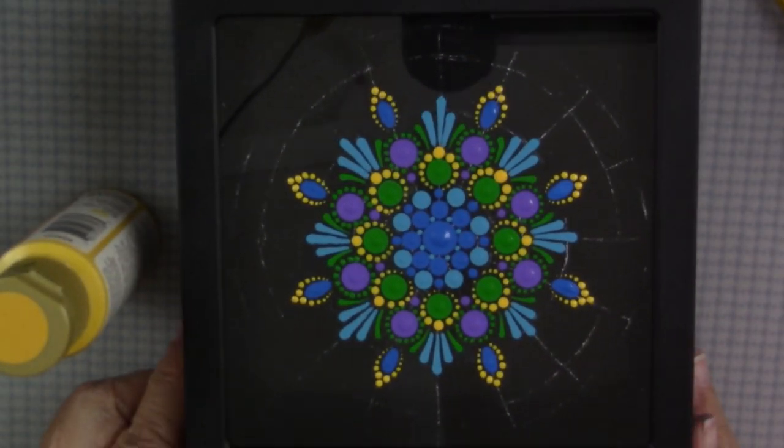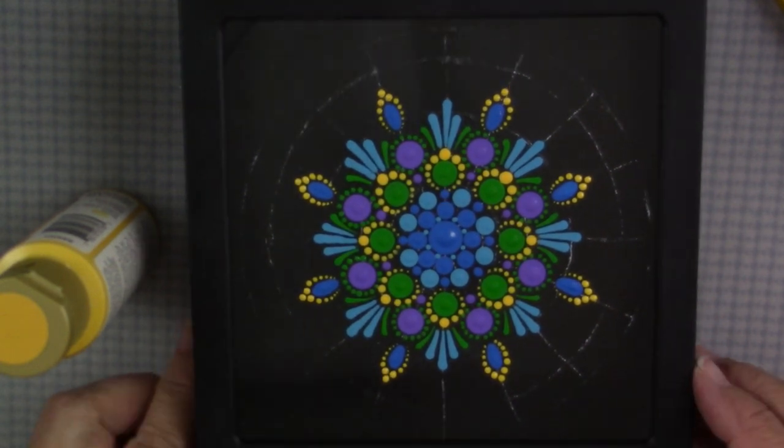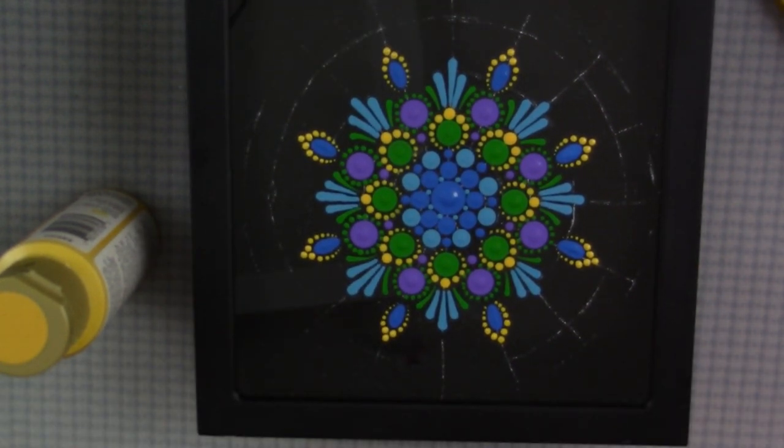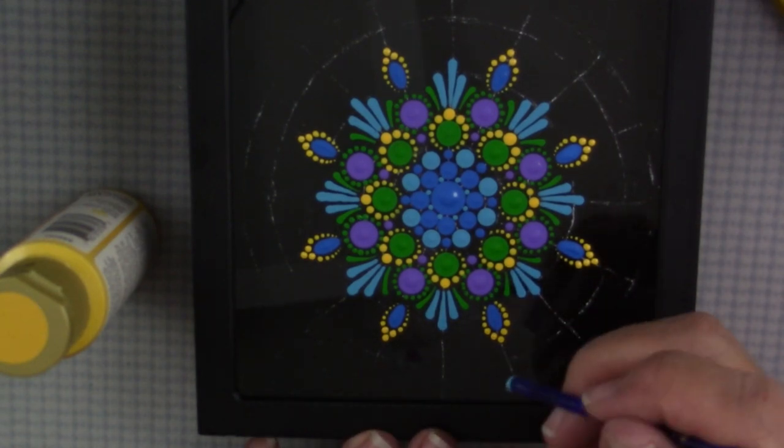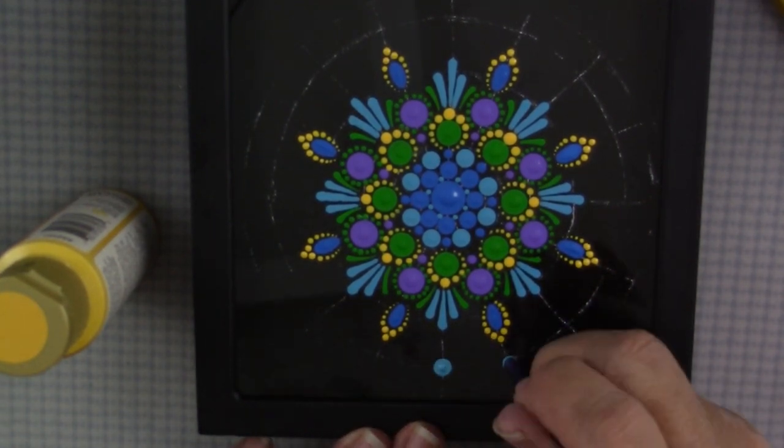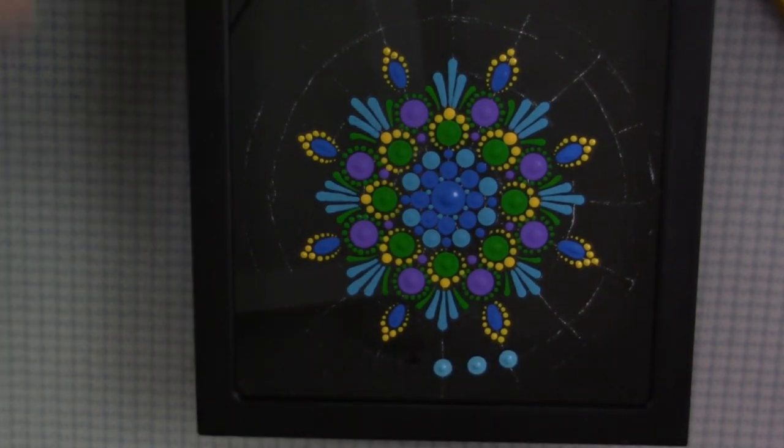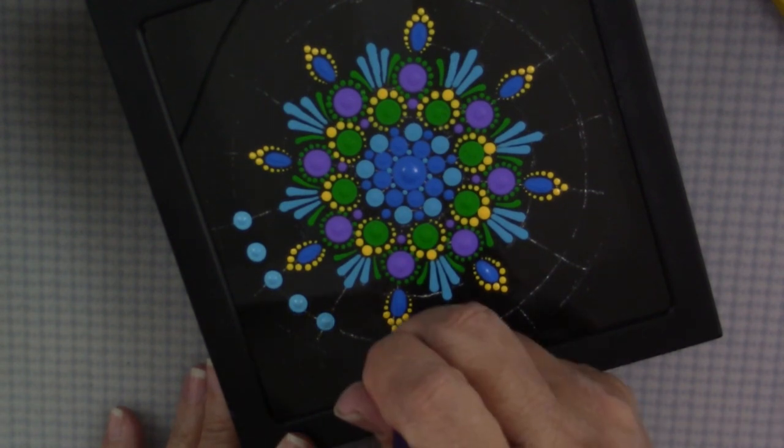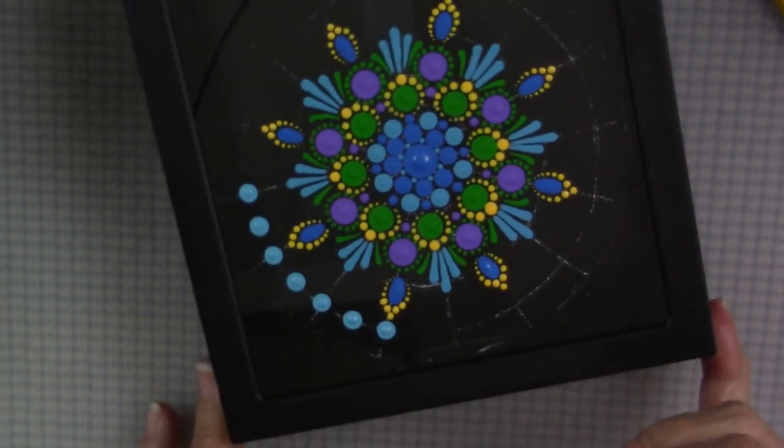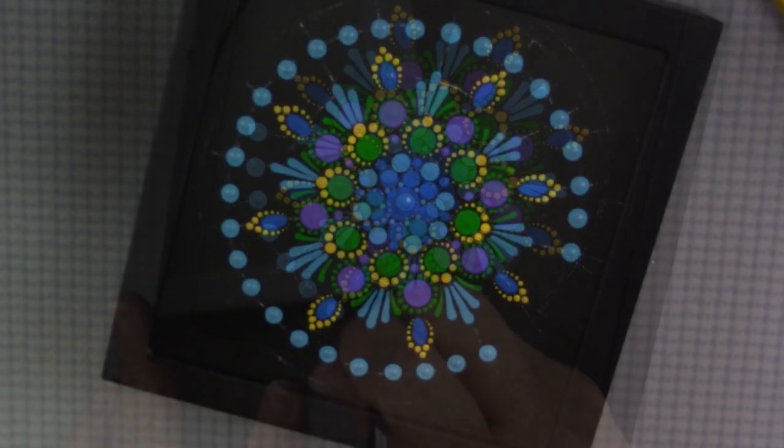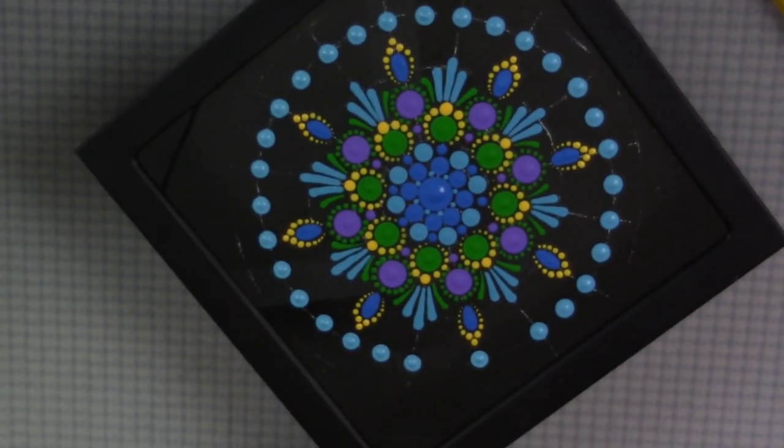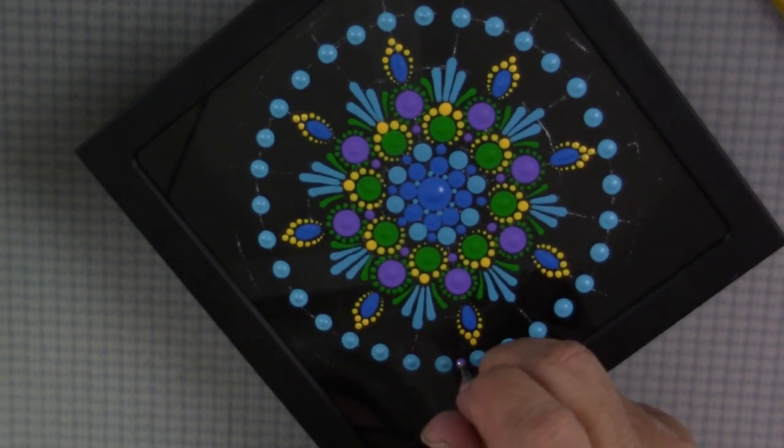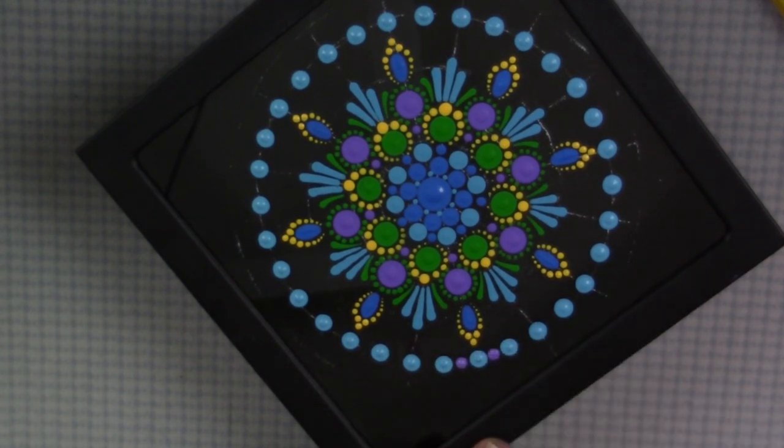Do you have any Thanksgiving family traditions that you use in your household? It would be fun to hear about those in the comments. I've done those all the way around and now I'm ready to go back in and do those outside rings. I'm using the calypso blue and I'm just using my grid marks. I will be putting a dot in between these so there's a little bit of spacing there. You can see how I'm using the grid and it makes it so easy to have that grid on there.